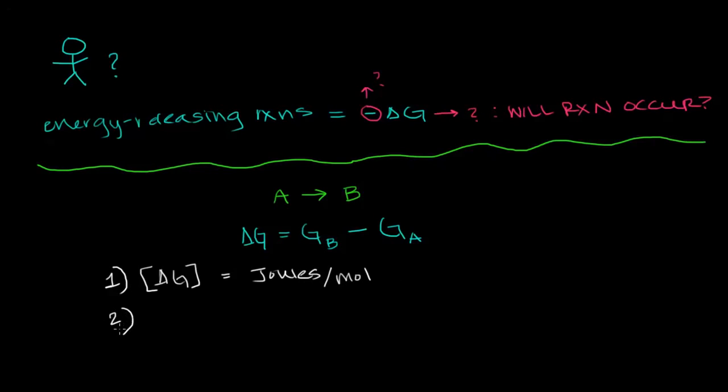Now the second point I want to make is that the change in Gibbs free energy is only concerned with the products and the reactants of a reaction, not the pathway of the reaction itself. It's what chemists call a state function. And this is a really important property of delta G that we take advantage of, especially in biochemistry, because it allows us to add the delta G value for multiple reactions that are taking place in an overall metabolic pathway. So to return to our example above, we had A turning into a product B. But what if the product B turned into another product, C?